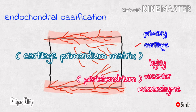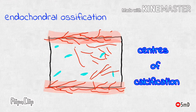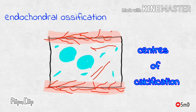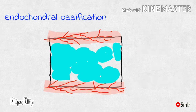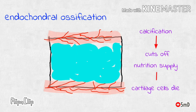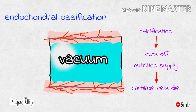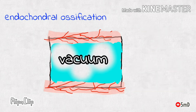Within this primary cartilage, centers of calcification appear in the cartilage matrix. These centers of calcification cut off the cartilage cells from their nutrition supply. As a result, the cartilage cells present in the primary cartilage die due to lack of nutrition, causing vacuum or empty spaces in the cartilage matrix.